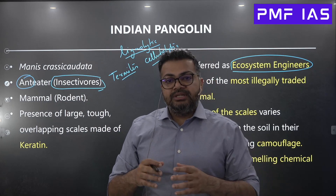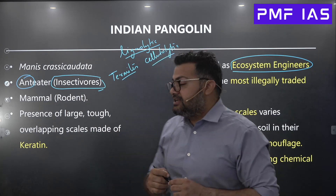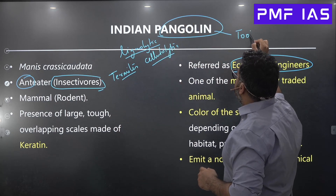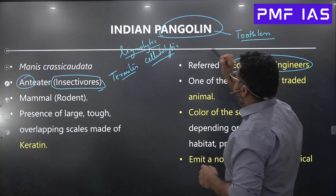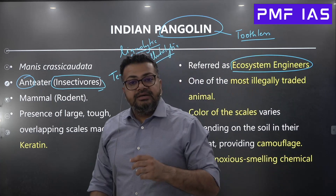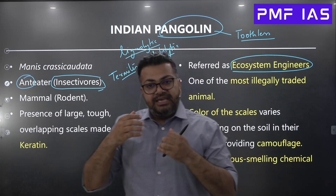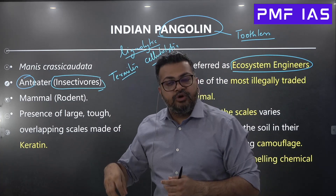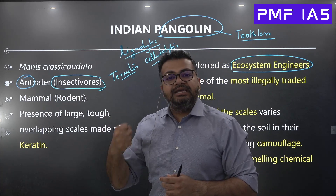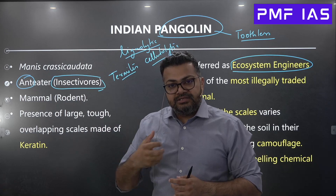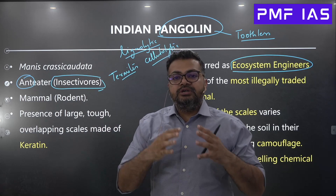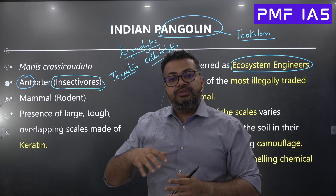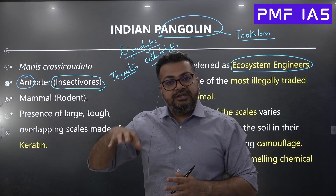When a pangolin eats termites and ants, it helps control the population of these organisms. Interestingly, Indian pangolins are toothless — they do not have teeth. Instead, they have a long sticky tongue, which they use to penetrate deep into termite colonies and ant colonies to eat them.